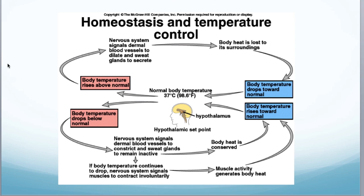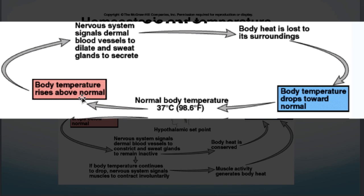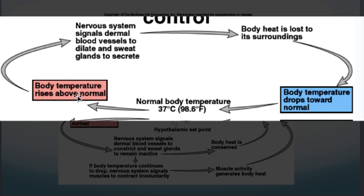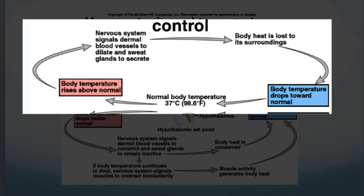We can also look at a different example where these functions are spread out more across the body. If we think about body temperature — normal body temperature is about 37 degrees Celsius or 98.6 Fahrenheit — if body temperature starts rising above normal, maybe it's hot out, or you were running or exercising, we have nervous system receptors at various parts of the body sending signals, and the brain acts as our control center, deciding we're getting out of line and what to do about it.